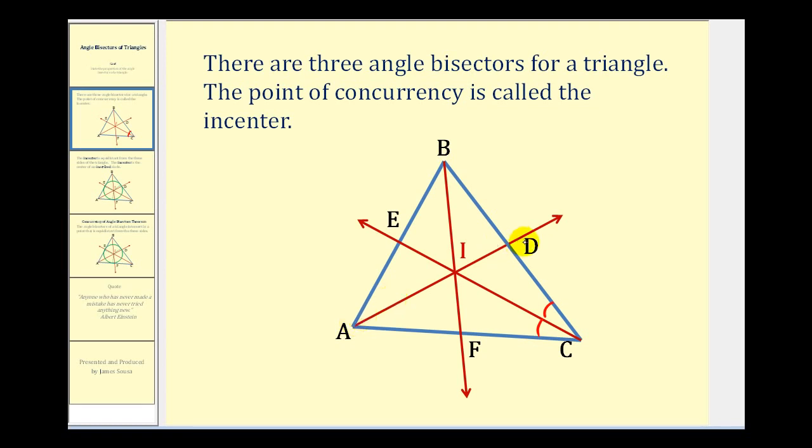Similarly, ray AD bisects angle A into two smaller congruent angles, so these two angles are congruent. And then ray BF bisects angle B, so that these two angles are congruent.